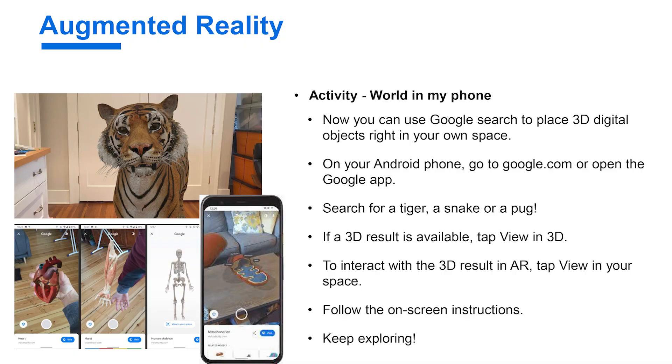I want to have you try something on your own. In your phone, Google the word dinosaur. You'll see the Wikipedia entry, and underneath you'll see 'Explore a Tyrannosaurus Rex in your space.' Click on 'View in 3D,' then 'View in your space.' Take your camera and slowly pan it around the floor, and the next thing you know, you're standing next to a Tyrannosaurus Rex — and he'll even growl at you if you give him a chance.